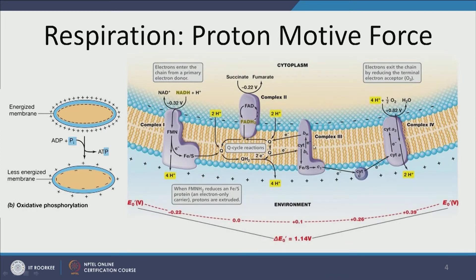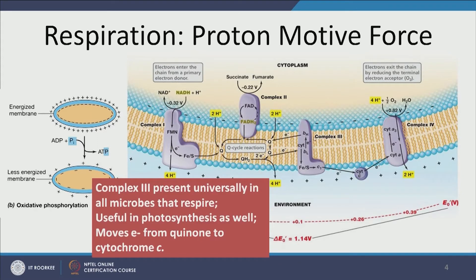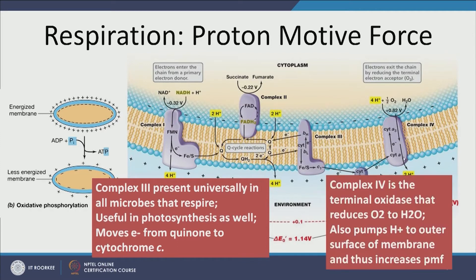In Complex III and Complex IV we have slightly different chemistry. Note that Complex III is present in all microbes that respire — any aerobic microorganism, be it cyanobacteria, plants, or us. It moves electrons from quinone to cytochrome C and acts as a channel through which protons can assemble on the outside of the cell membrane, increasing the potential difference. Complex IV is a terminal oxidase that reduces oxygen to water and pumps hydrogen to the outside, thus increasing the proton motive force. The common function of all four complexes is to pump protons outside and maintain a strong PMF.